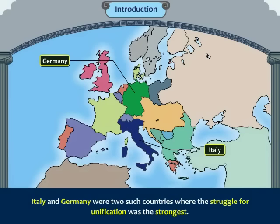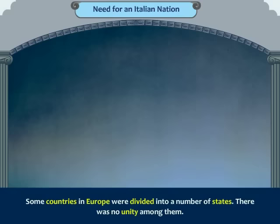Italy and Germany were two such countries where the struggle for unification was the strongest. In this lesson, we will learn about the unification of Italy.